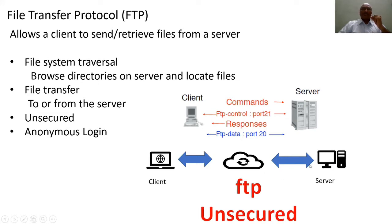An important point about FTP is that it is basically an unsecured way of exchanging data from client to server. Whatever data is being transmitted between the two computers is unsecured — in other terms, anybody can try to see what exact data is being transferred. Once a third person can see the data, there is obviously a chance to change the data too.